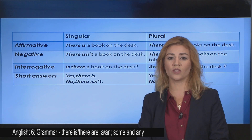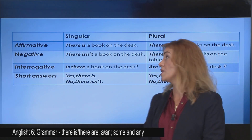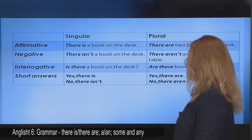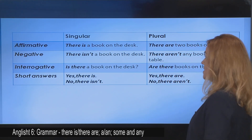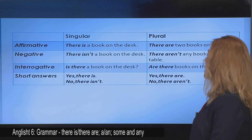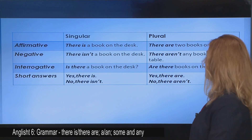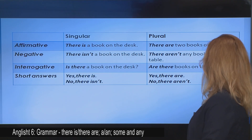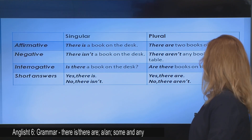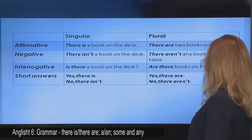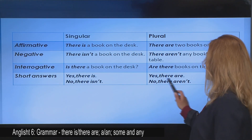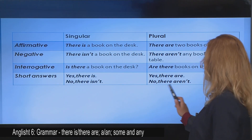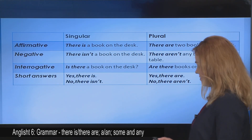Now let's see the plural form. Affirmative: There are two books on the desk. Negative: There aren't any books on the table. Are there books on the desk? Yes, there are. No, there aren't.